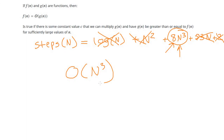So the Big O definition tells us what can be ignored and what can't. There are two ways to look at it: the mathematical way, where you find a constant you can multiply by your simplified function to make it bigger than the original; and the pragmatic way, where you just find the biggest term and drop the coefficient — that's your Big O. In the next video we'll look at actual algorithms and find their Big O, bringing the whole algorithm analysis process together.